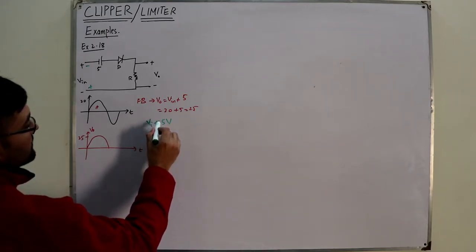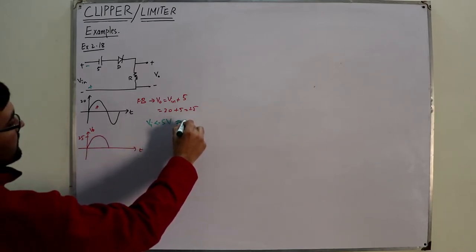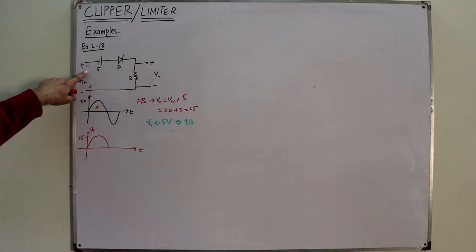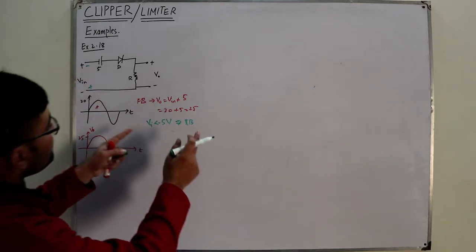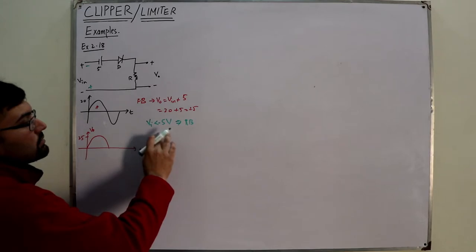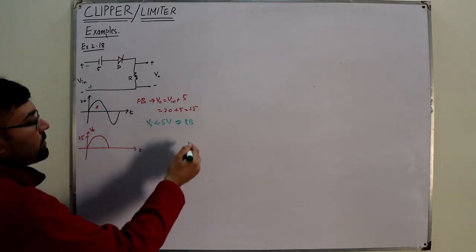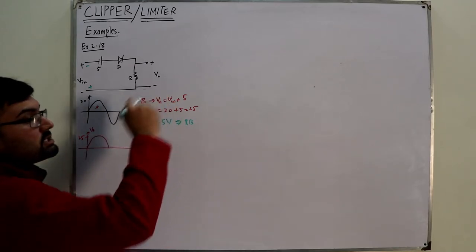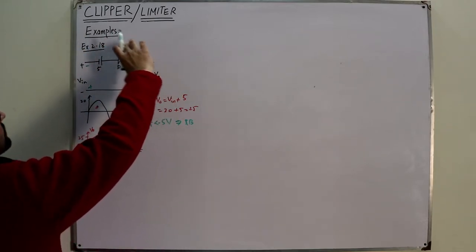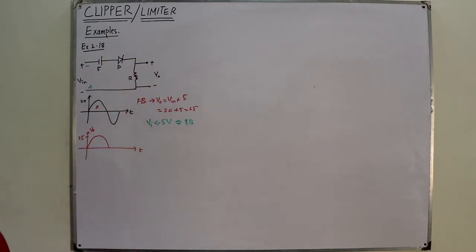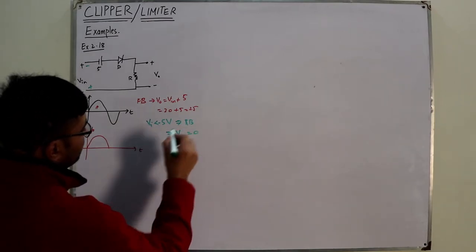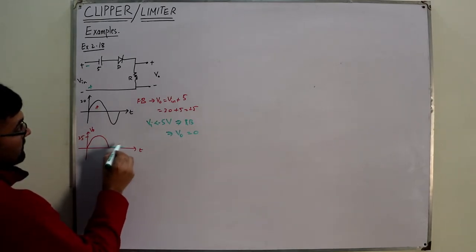When the input voltage is less than minus 5 volts, the diode will be reverse biased — this source is making it forward biased, but that is the negative polarity, so overall it is reverse biased. When it is reverse biased, this is an open circuit and V_out would be directly equal to zero volts. So zero volts is the output in that region.